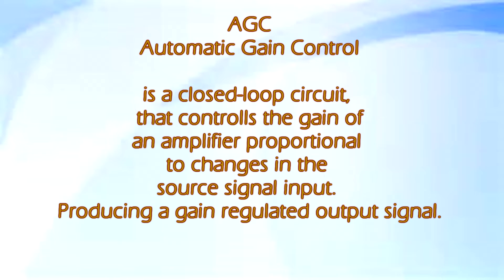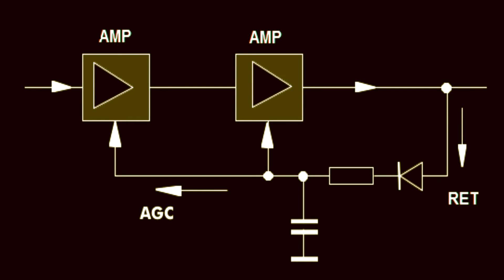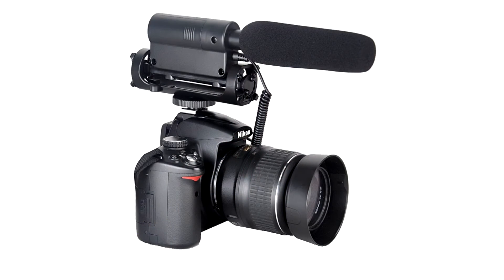An example would be in your television camera, your video camera. You hook a microphone up to your camera and you don't want to be standing there adjusting the volume all the time. The camera has a circuit in it called AGC, and this circuit automatically controls the gain of the amplifier in order to maintain a constant, correct voltage for the signal in a predetermined range. This is great if you're an amateur because you can plug your mic in and know you're going to get a good signal all the time.